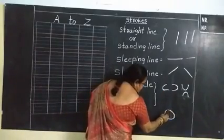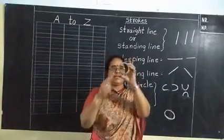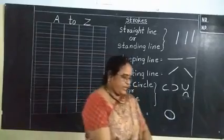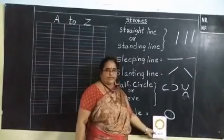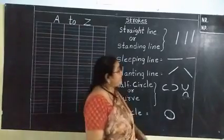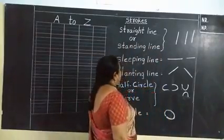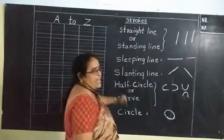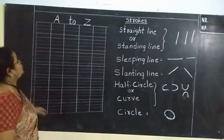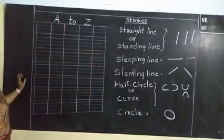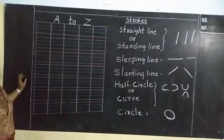This is a circle — full round, like a ball. See here, this is a circle. All of you listen — these are the strokes. We use strokes to write the alphabet. With the help of these strokes we can write the alphabet. You already know. Come on.